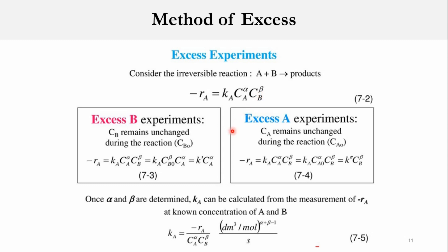We need to perform two experiments. In the excess A experiment — as in example 5.1 where water was in excess — once a species is in excess, it is taken out of the kinetic equation and we treat the system as pseudo first order. In the excess A experiment, C_A remains unchanged, so minus R_A equals K_A times C_A0 raised to power alpha times C_B raised to power beta. Since C_A equals C_A0, the term K_A times C_A0 becomes K', making it a pseudo first order system from which we can determine beta and K'.